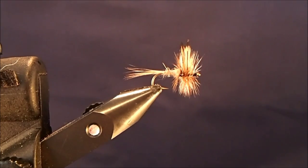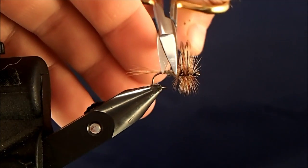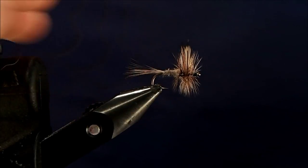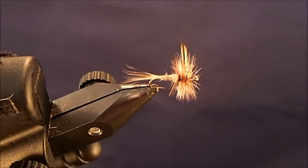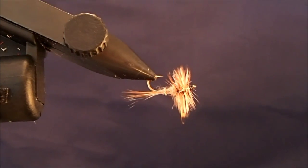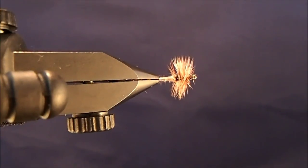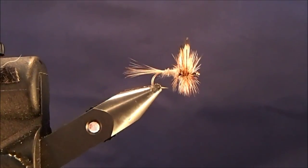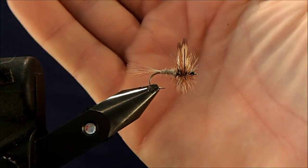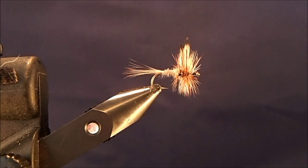And this is a heavily hackled fly. So it rides well in turbulent water. It's a good floating fly. You can see what it looks like from the top. See my wing sections. See what it looks like from the bottom. And that is an Adams dry fly.